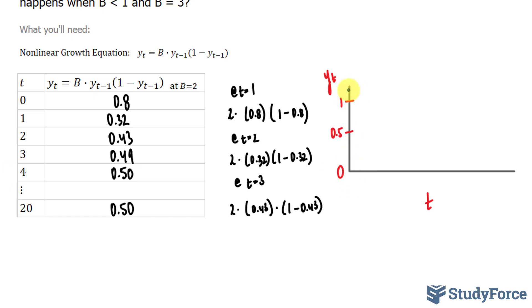So at time 0, we have 0.8, and then it dips down to 0.32, and then back to 0.43. And this is just a sketch, so it's not purely accurate.